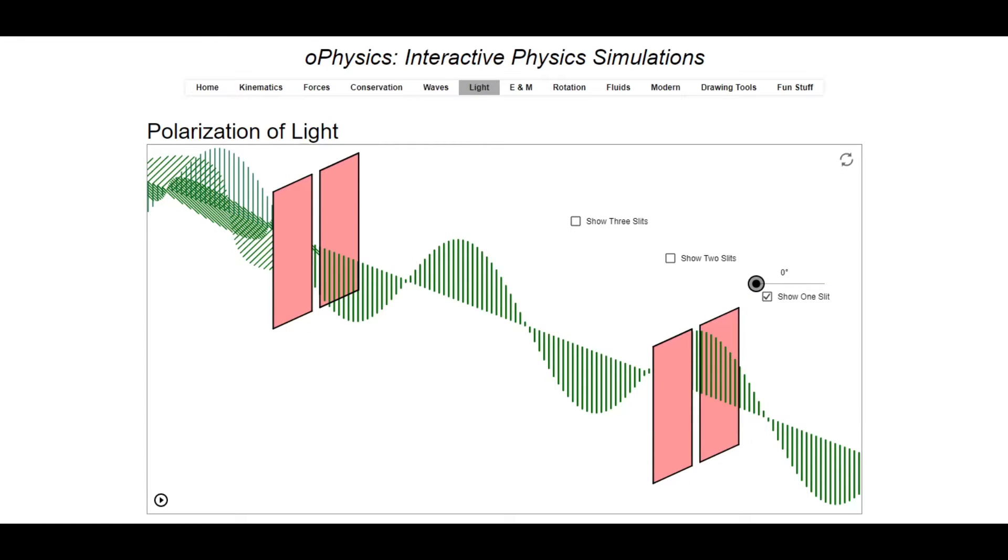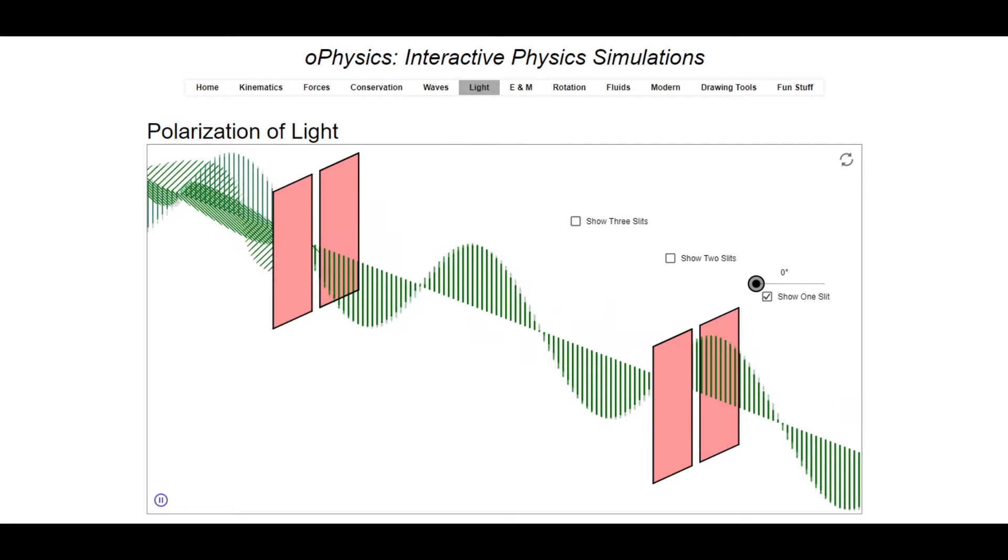Now in the last video we already went over what linear polarizers do, but just a quick recap. If the linear polarizers are perfectly aligned with each other, the light passes completely through.